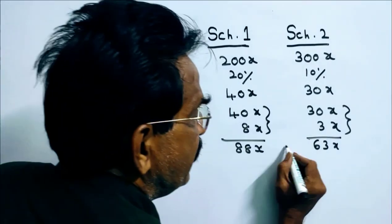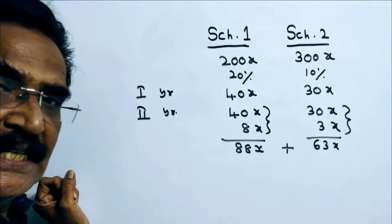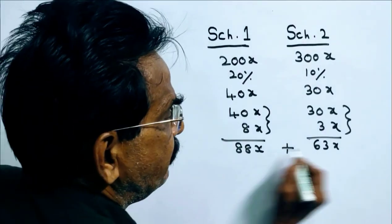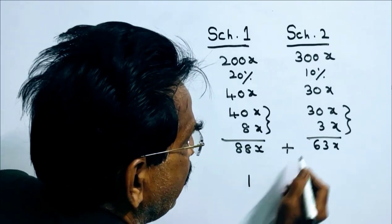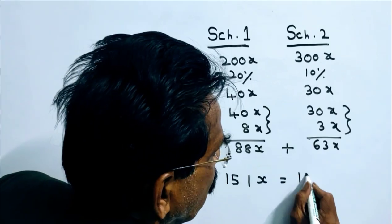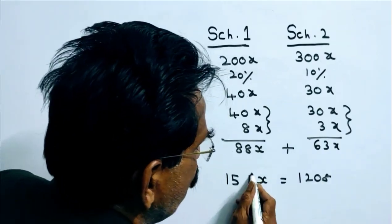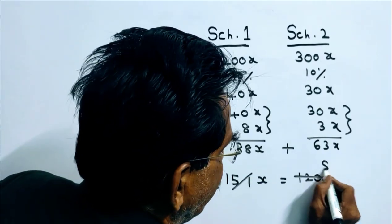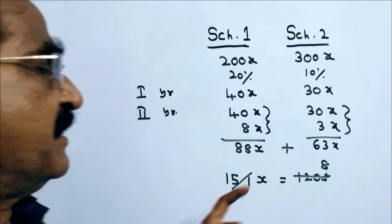Now it is given that this plus this, total interest he received, 88 plus 63. 151x is equal to 1208. So x is equal to 8 friends.